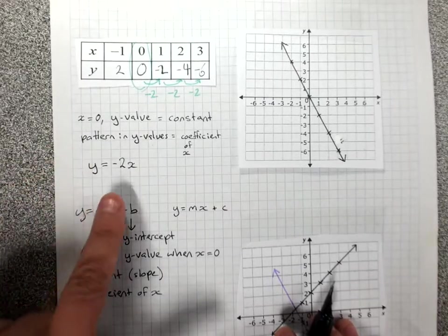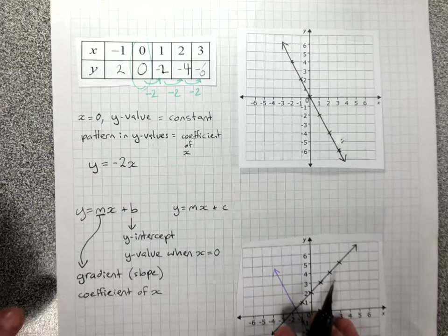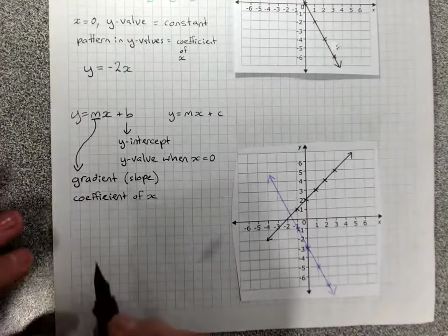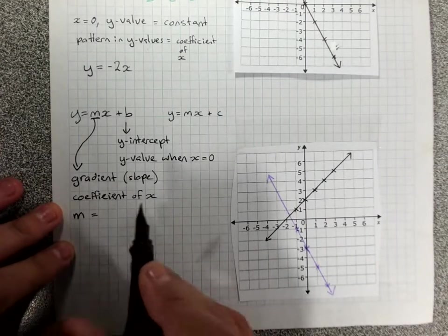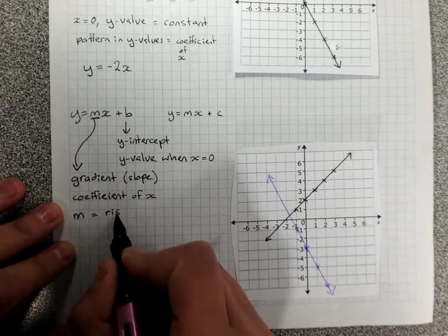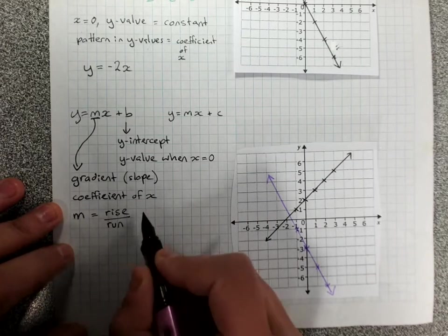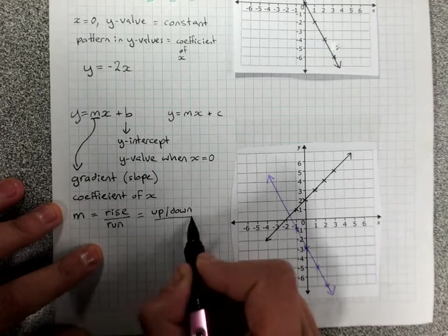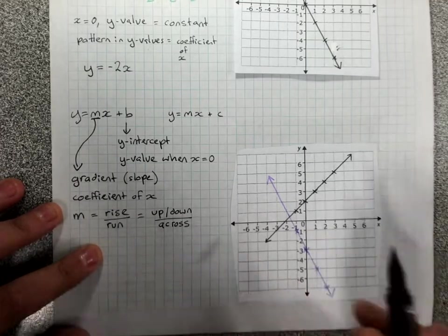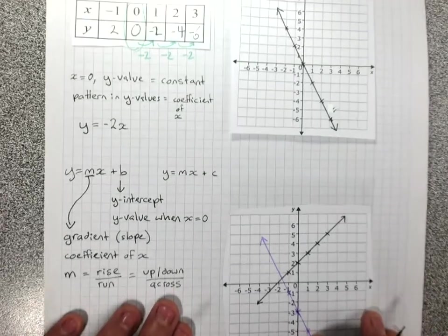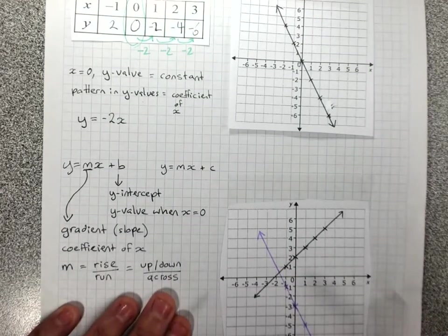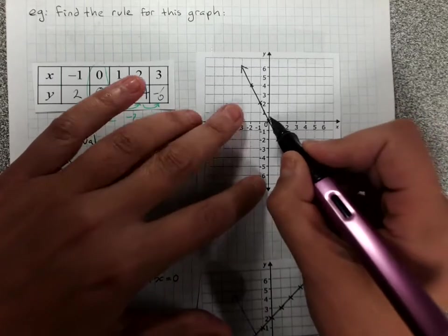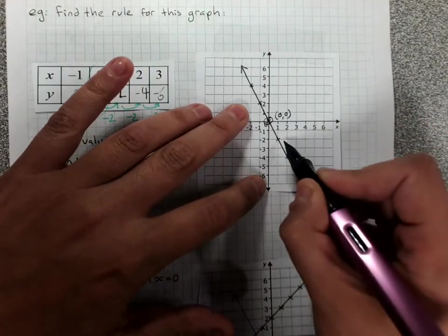So m is the coefficient of x and it is the gradient, the slope of the line. The coefficient of x is the slope. Now when I talk about gradient, because gradient has the symbol little m, the formula is rise over run. Or we could think about that as how much the line went up or down, rise or fall, over how much the line went across. What that means is, we'll have a look at this one. You take any two points, let's take 0, 0 and 1, negative 2.